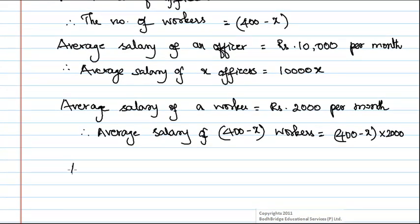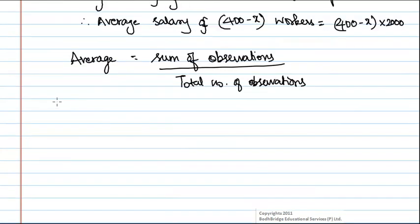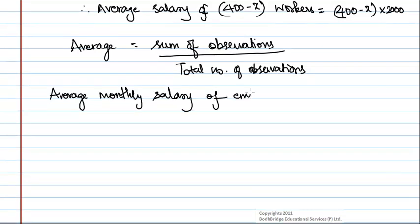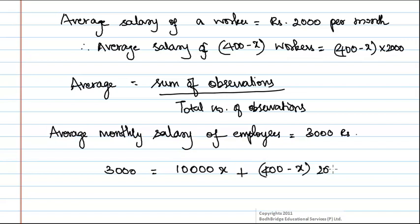We know that average is defined as the ratio of sum of observations divided by total number of observations. It is given in the question that the average salary of employees is equal to 3,000 rupees. Hence, we can write: 3,000 = (10,000X + (400 minus X) × 2,000) divided by 400.